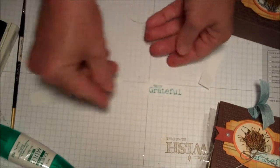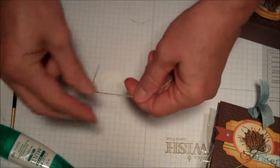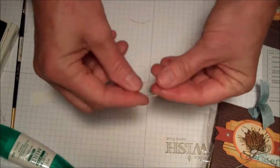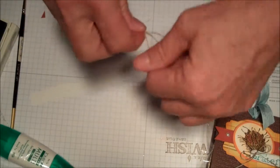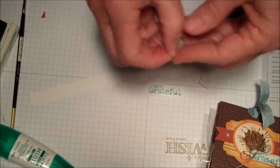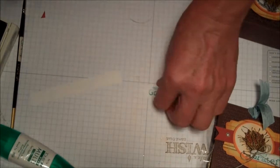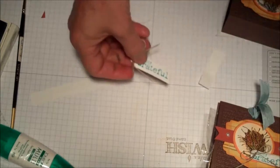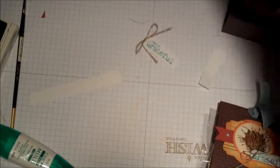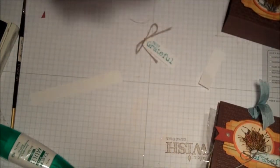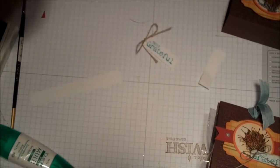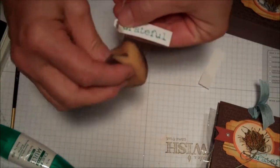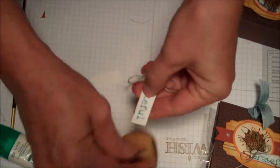Make a little tag, take a piece of linen thread, tie a bow just like so, get a glue dot, glue dot it on the end of your little tag. Then I actually use Chocolate Chip or Espresso and just kind of took away some of that white.